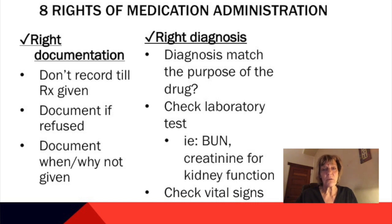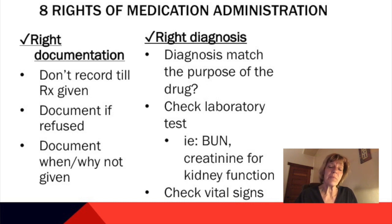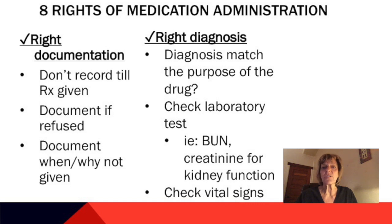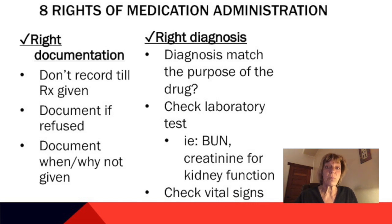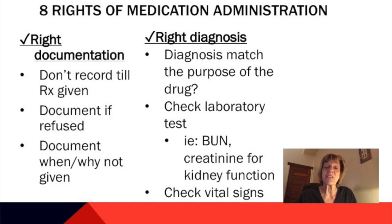Right diagnosis is a newer right and an important one. Ask whether the diagnosis matches the purpose of the drug. For example, if a patient is admitted for a cardiac problem and antibiotics are ordered, does that seem appropriate? You also need to check laboratory work with many medications — is the drug at a therapeutic level? For some drugs like metformin, check the BUN and creatinine to confirm kidney function. Check vital signs before medications that alter blood pressure, pulse, or depress the nervous system, such as heavy-duty pain medications that may suppress respirations.